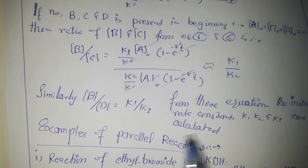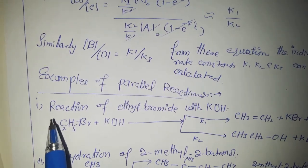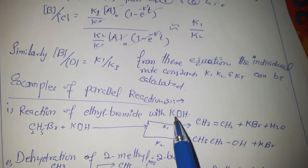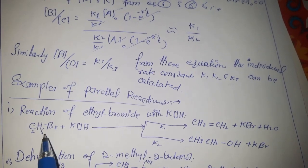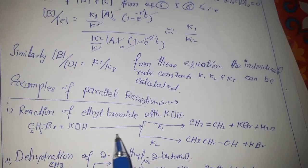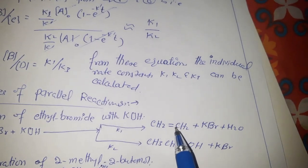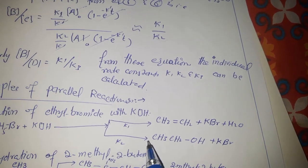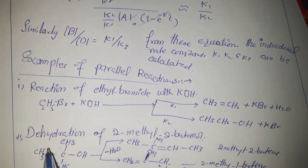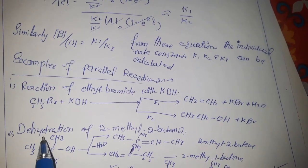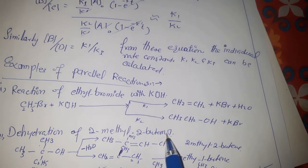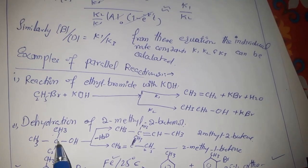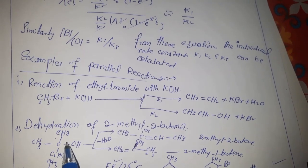Now we want to give examples of parallel reactions. The first example is the reaction of ethyl bromide with KOH: when ethyl bromide reacts with KOH, we get two products — ethene and ethyl alcohol. The second example of a parallel reaction is the dehydration of 2-methyl-2-butanol.